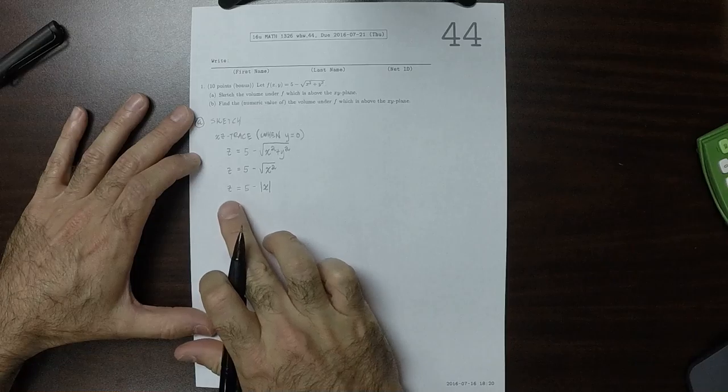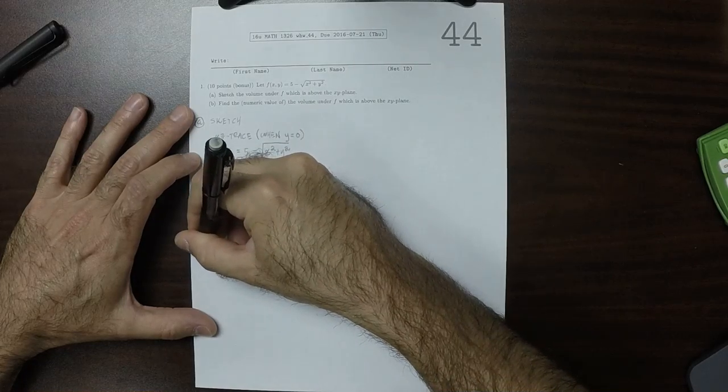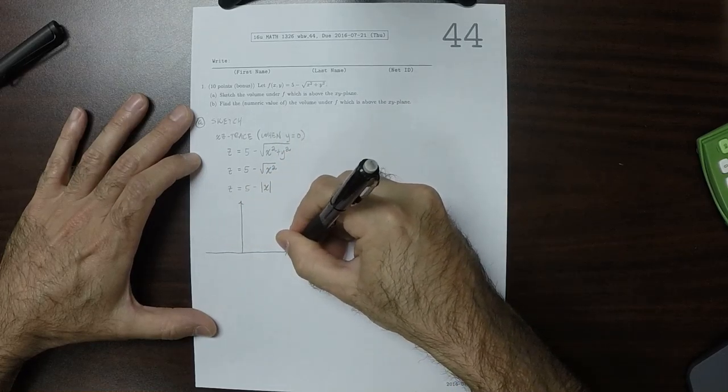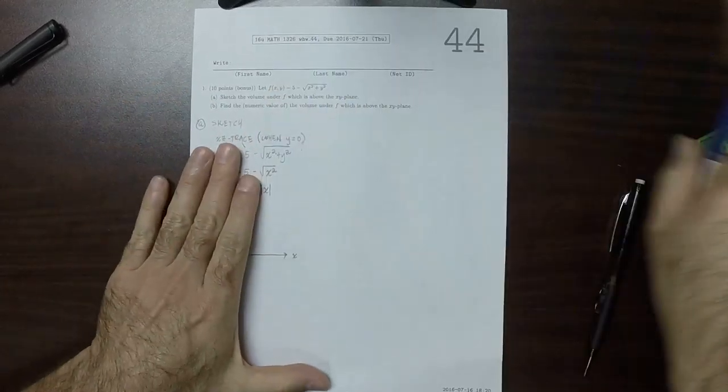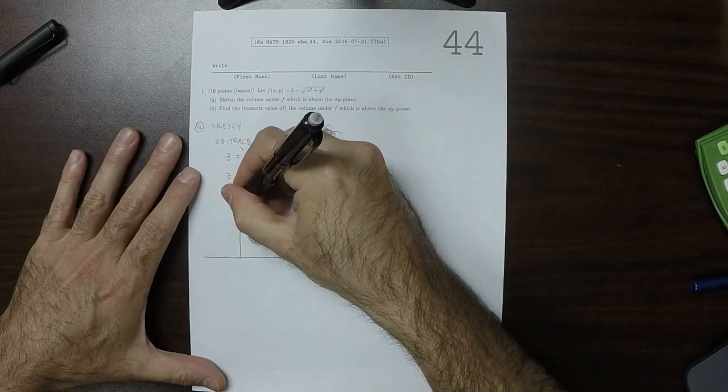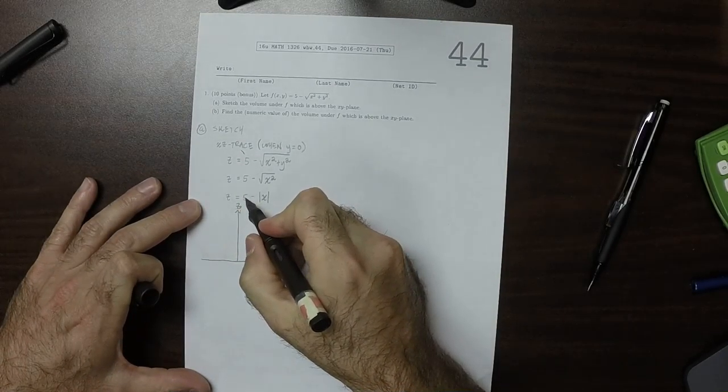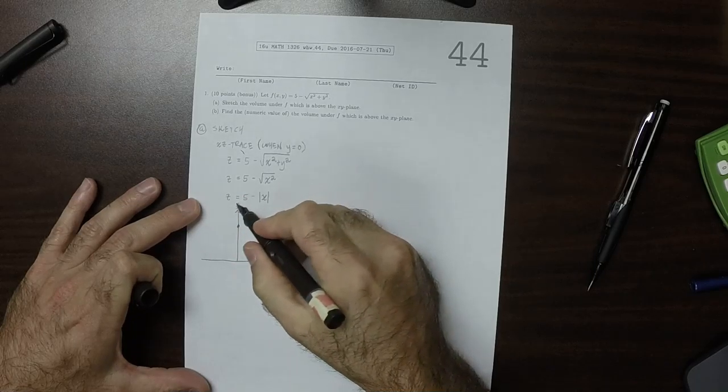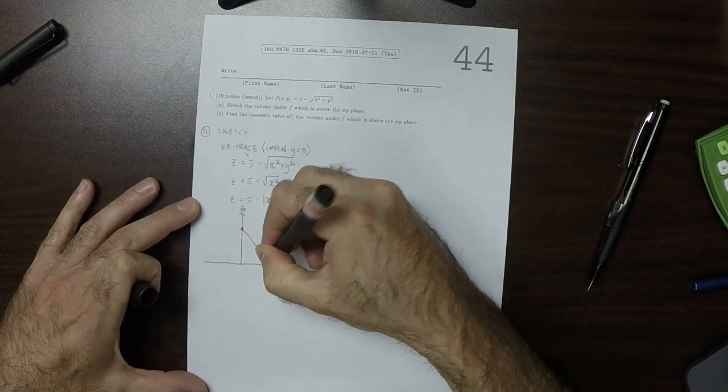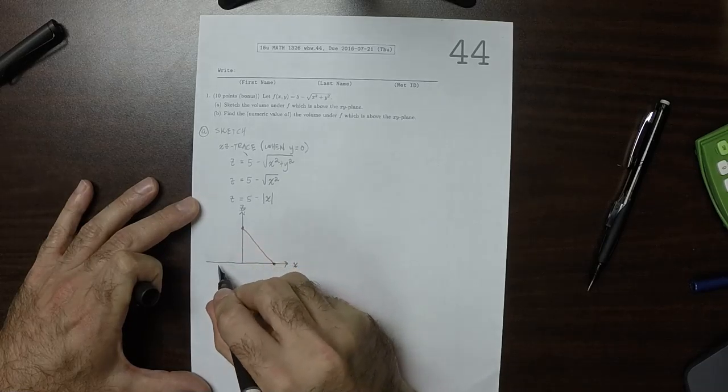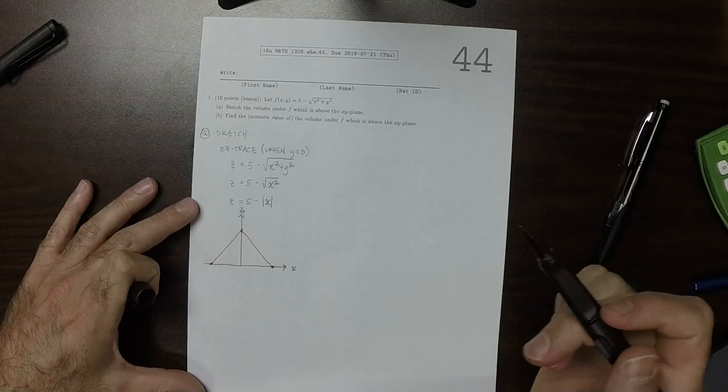So in this case, we have the relation z is 5 minus absolute value of x. So the xz trace looks like this. It starts out at 5, up here at 5. And then when x is 5, 5 minus absolute value of 5 is 0. And then when x is negative 5, absolute value of negative 5 is also 5.